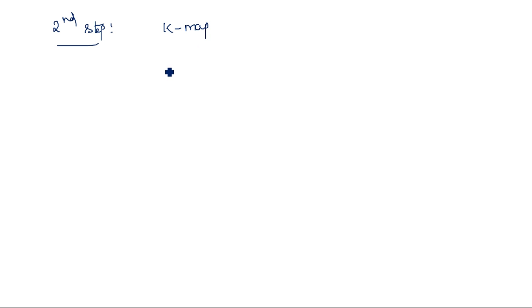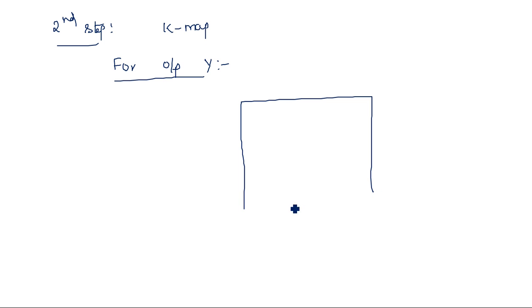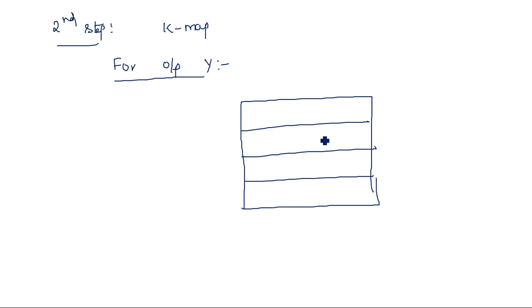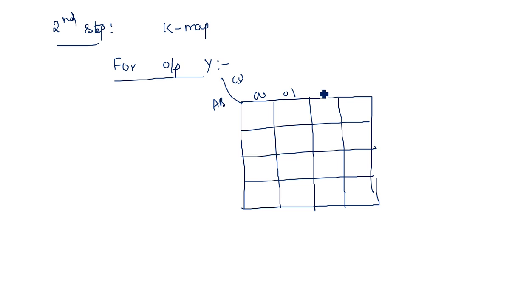The second step is the K-map. For output Y we have only one output, so only one K-map will come, but it is a four-variable K-map because there are four input variables A, B, C, D. The K-map axes are arranged as A, B, C, D in Gray code order: 00, 01, 11, 10.